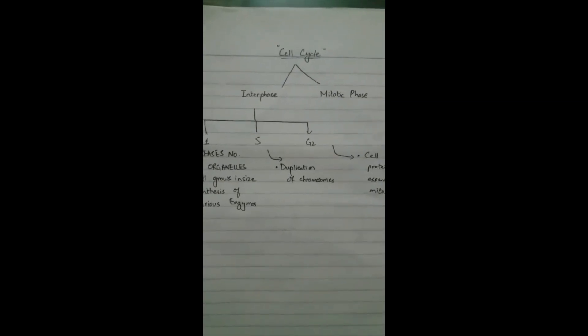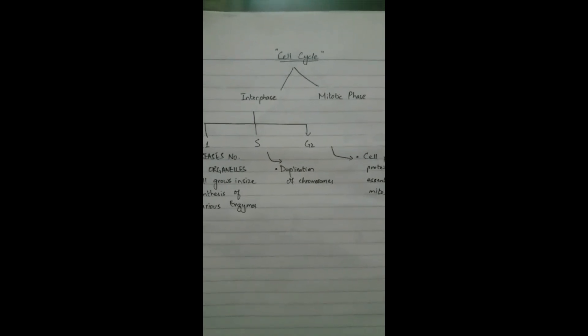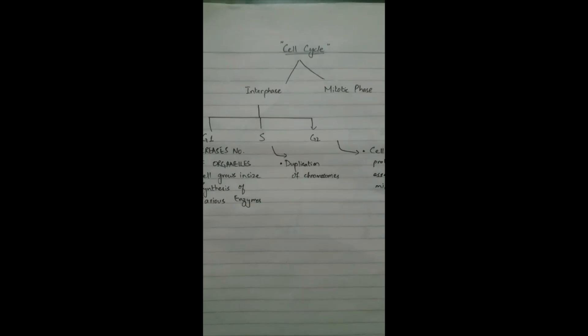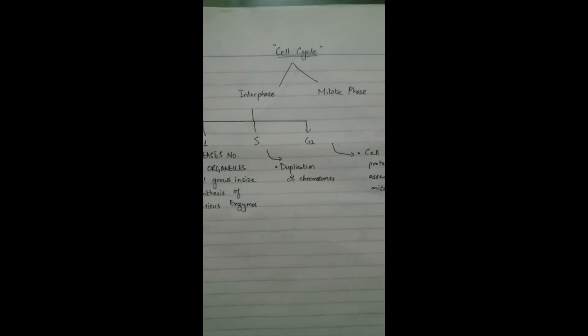Assalamu alaikum, today we will start a new chapter, the cell cycle. Cell cycle is basically a series of events from the time a cell is produced until it completes its division and produces new cells.